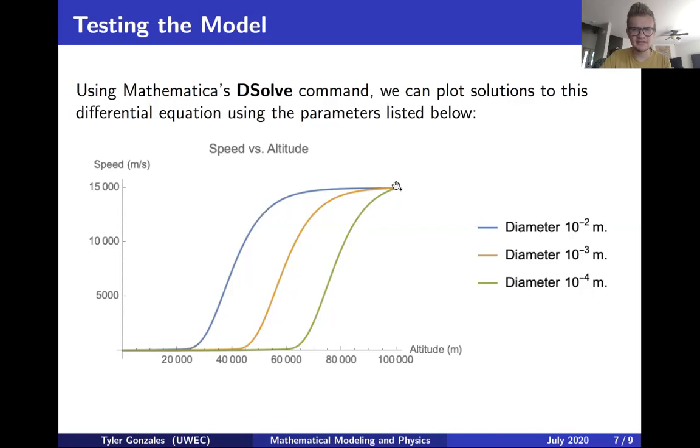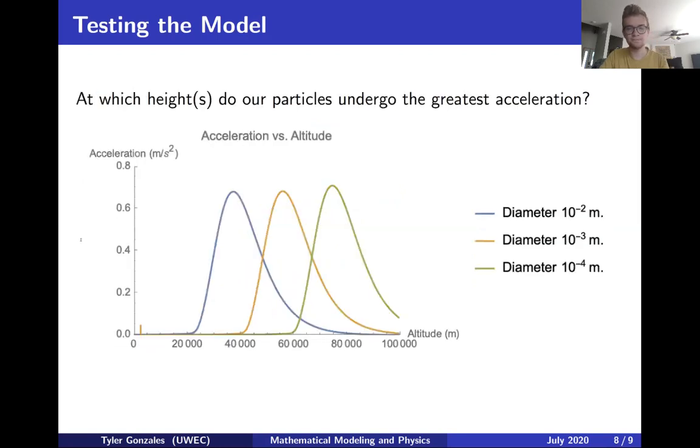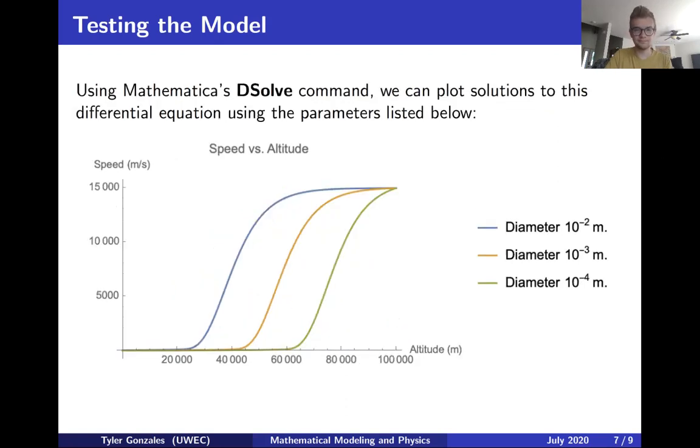I would like to point out here on this slide that notice that as our altitude decreases, as we're getting closer and closer to the earth, the speeds of these drastically decrease. They undergo the greatest acceleration at the points where they had the biggest rate of change of speed, so that would be right here, the biggest slope—it's the derivative stuff going on there.